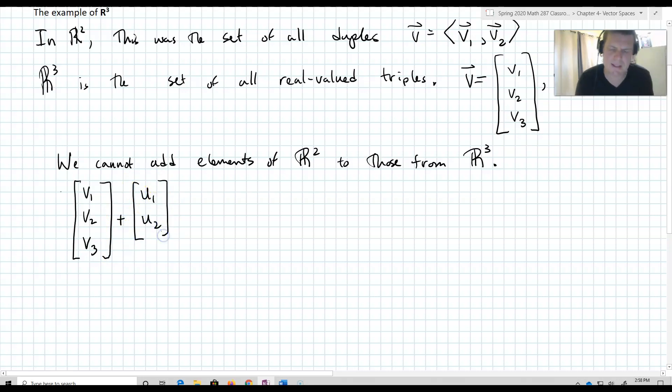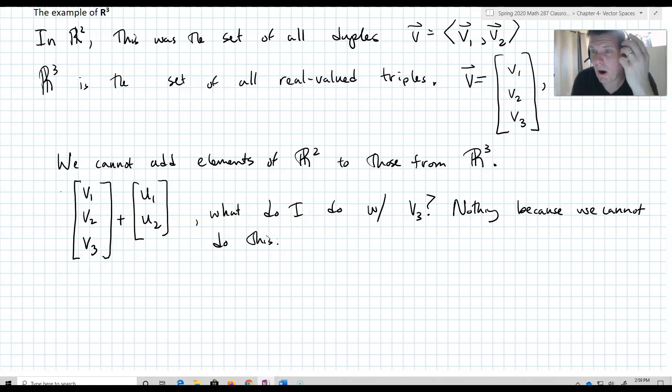You can kind of see that this is pretty much nonsensical. What do I do with V3? The answer is nothing, because we cannot do this. So, we don't add R² to R³, and the reason why I bring that up is elements of R² are not elements in R³.